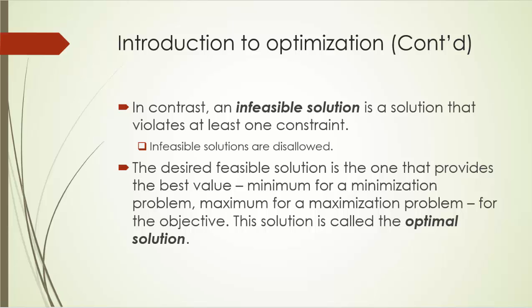The desired feasible solution is the one that provides the best value for the objective — minimum for a minimization problem, and maximum for a maximization problem. This desired feasible solution is called the optimal solution. The optimal solution or solutions will generate the best, or optimal, objective value.